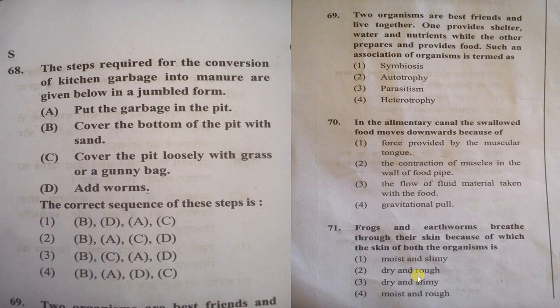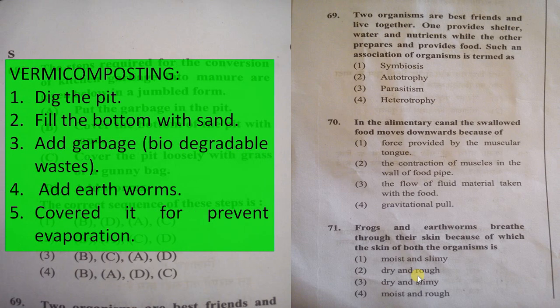The next question is about vermicomposting. The steps for converting kitchen garbage into manure are given in jumbled form. Vermicomposting is a process that uses earthworms to convert biodegradable wastes or kitchen garbage into manure. The steps are: dig a pit, fill the bottom with sand, add biodegradable garbage, then add earthworms, and finally cover it to prevent evaporation.